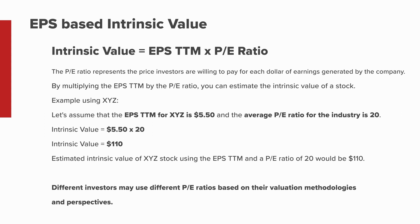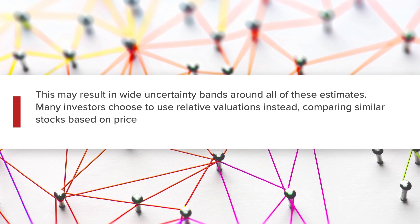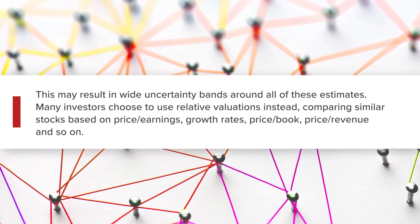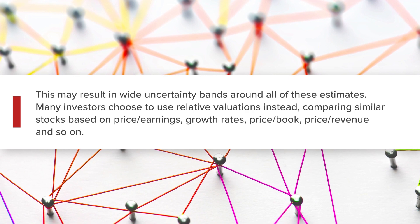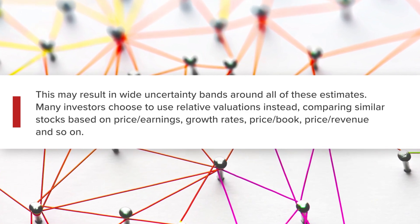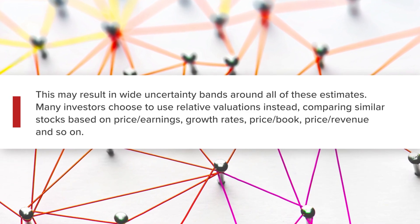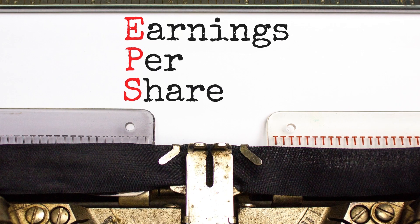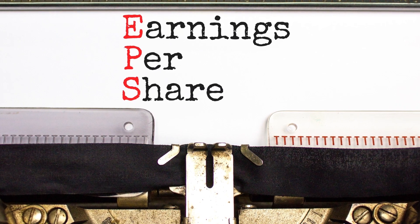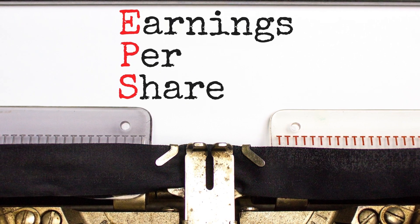Different investors may use different PE ratios based on their valuation methodologies and perspectives. This, in the best of cases, results in wide uncertainty bands around all of these estimates. Many investors choose to use relative valuations instead, comparing stocks to similar stocks based on price-earnings, growth rates, price-to-book, and price-to-revenue ratios. These numbers just tell part of the story — investors still need to study the company in detail, both quantitatively and qualitatively.